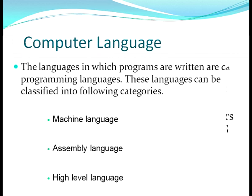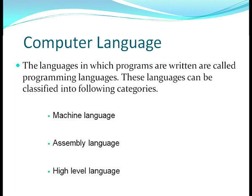We start with computer language. We all communicate through languages — if I want to tell you something, it is important that we know each other's language. Similar logic goes with a computer also. Whatever I want to instruct to my computer, the computer should understand and vice versa. So the languages in which programs are written are called programming languages. These programs are a set of instructions that help us tell the computer what we want to do. These languages can be classified into machine language, assembly language, and high level language.